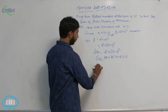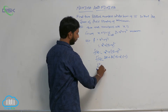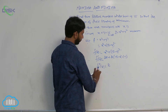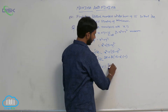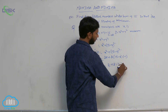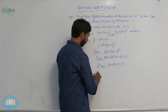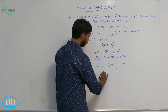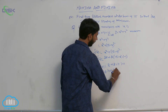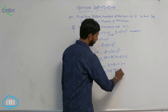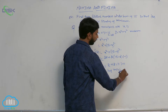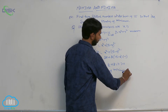The second derivative f''(x) is equal to 2 plus 2, which is equal to 4, greater than 0. Therefore, f(x) has a minimum value.